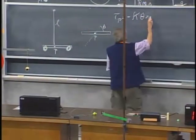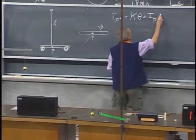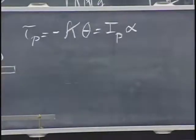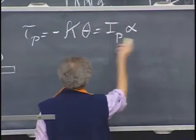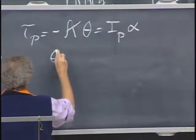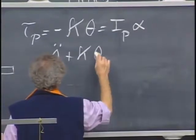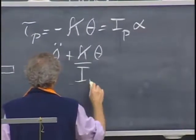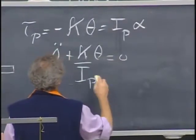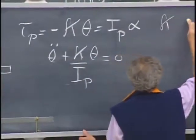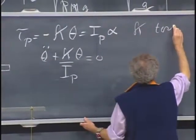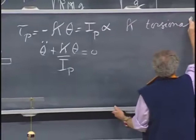And this is the moment of inertia about point P times alpha, and alpha is theta double dot. So we're going to get that theta double dot plus kappa times theta divided by I of P equals zero. And kappa, by the way, is the torsional constant.